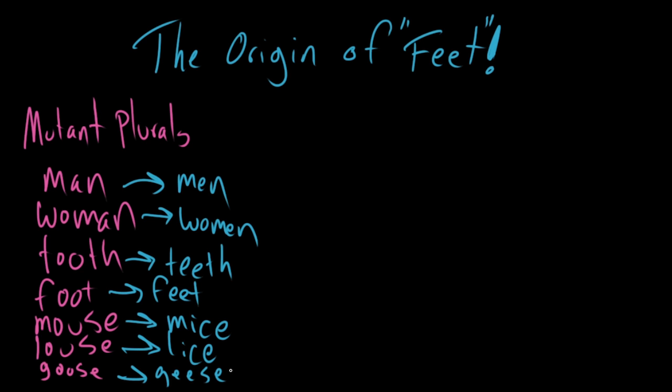Now, the reason that we have these seven weird mutant plurals in English is kind of complicated. But I'm lucky enough to be able to work with an actual linguist. Hello, Jake. Hey grammarians. Jake, is it true that you are a linguist? Yep, it's true. Alright, so Jake, what is the deal with feet? Where do these mutant plurals come from? If we take the word foot and we drag it through history, how do we get to the plural feet?